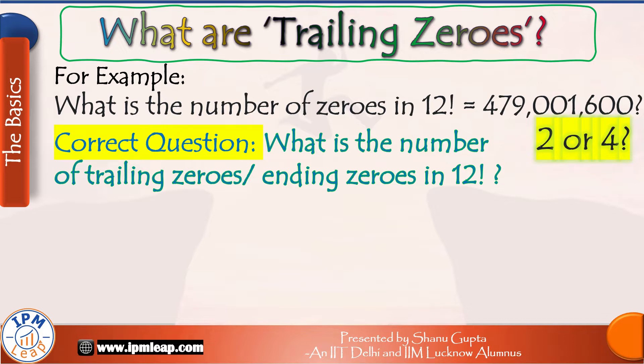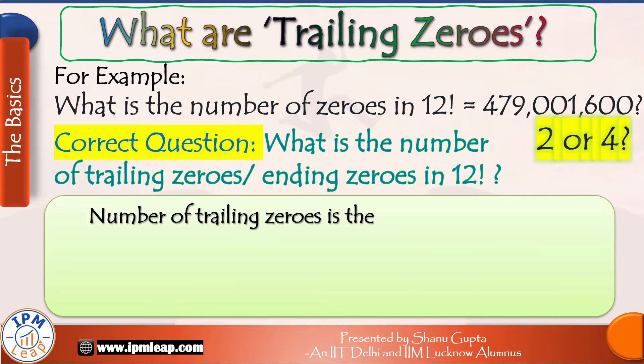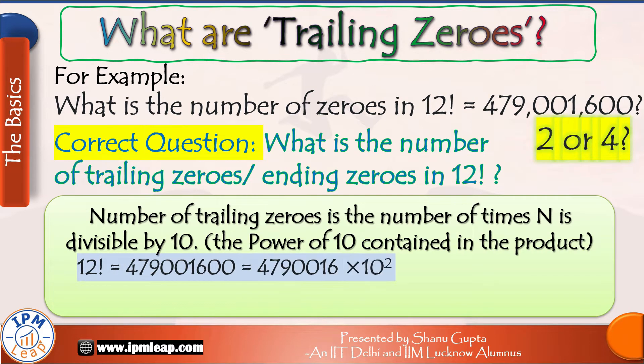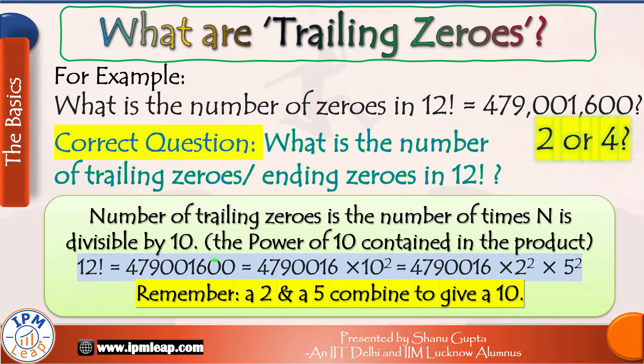Okay, so taking the same example, we have the value of 12 factorial. This number has two zeros at the end. It can be written as 4790016 × 10^2. That is to say, the highest power of 10 that divides this number is 2, which contributes to these two trailing or ending zeros.